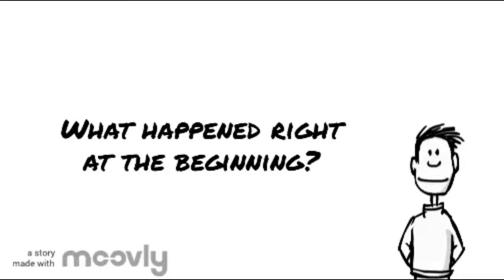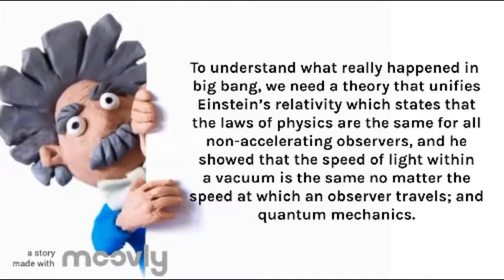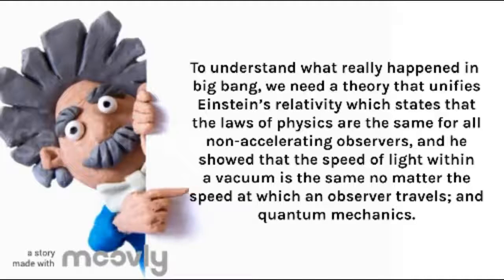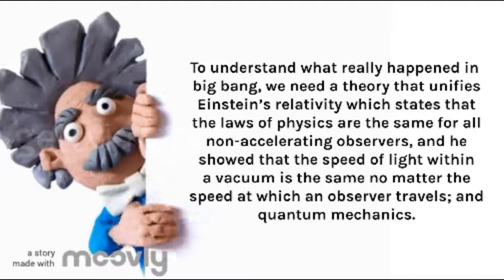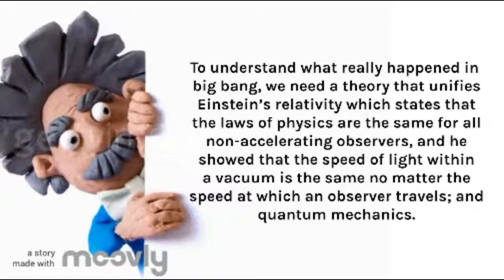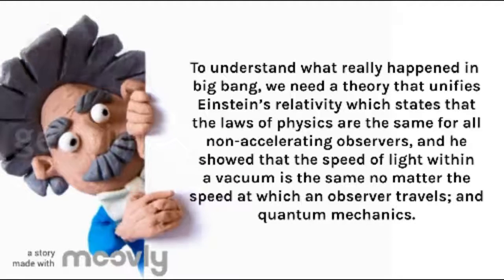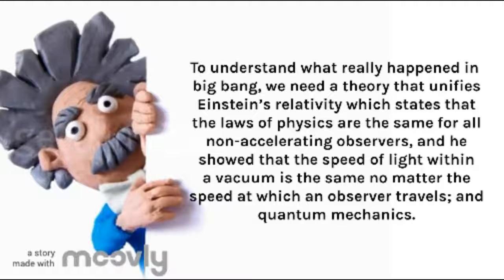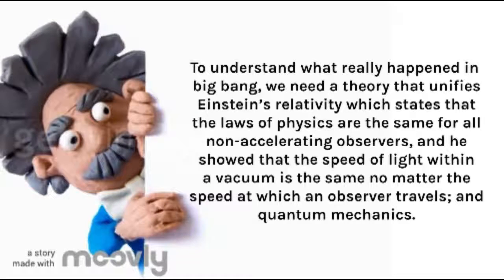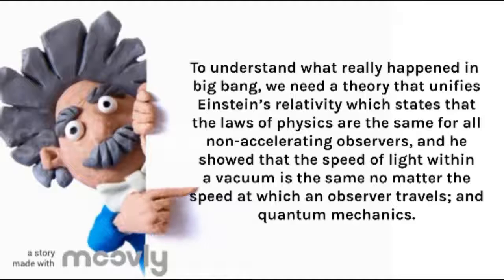What happened right at the beginning? To understand what really happened in the Big Bang, we need a theory that unifies Einstein's relativity — which states that the laws of physics are the same for all non-accelerating observers and that the speed of light within a vacuum is the same no matter the speed at which an observer travels — and quantum mechanics. This is something that scientists are working on right now.